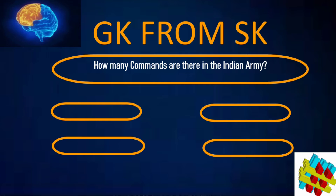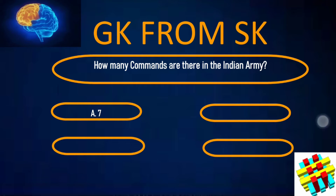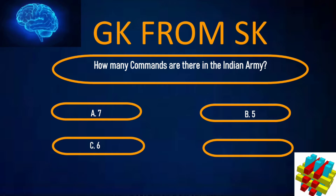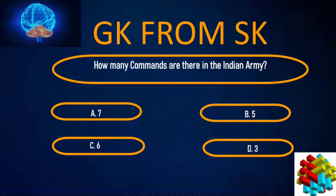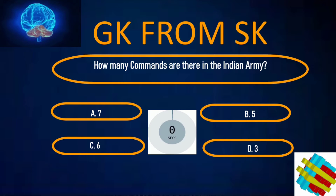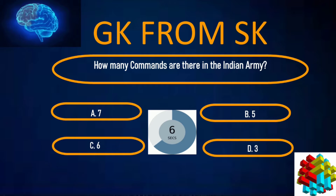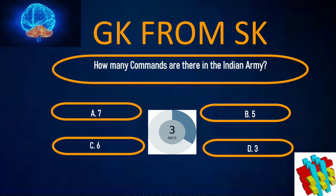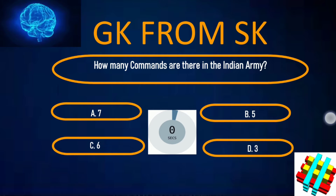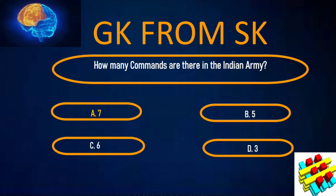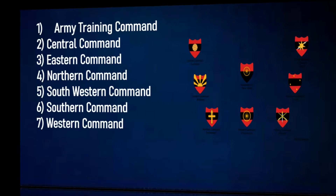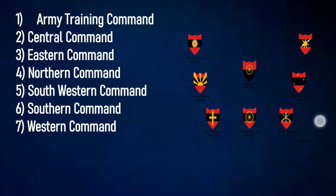How many commands are there in the Indian Army? A. 7, B. 5, C. 6, D. 3. Your time starts now. The 7 commands are: 1st Army Training Command, 2nd Central Command, 3rd Eastern Command, 4th Northern Command, 5th South Western Command, 6th Southern Command, 7th Western Command.